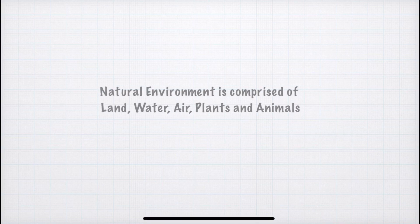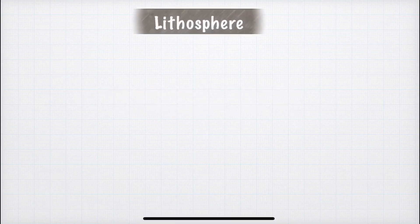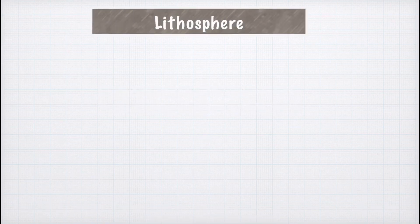As you know, natural environment is made up of land, water, air, plants, and animals. Now we'll discuss the spheres related to these components. You've also studied these spheres in your sixth standard, but we'll discuss them in detail here.